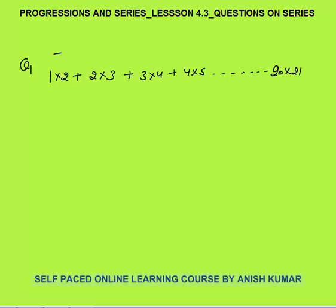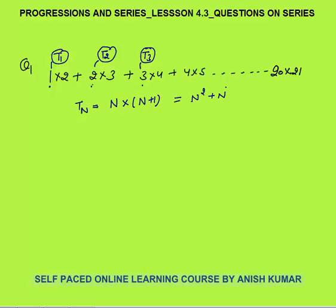In the first term, the first number is 1; in the second term it is 2; in the third term it is 3. So the first number in the nth term would be n. The next number is 1 greater than n, giving n(n+1), so the nth term is n² + n.